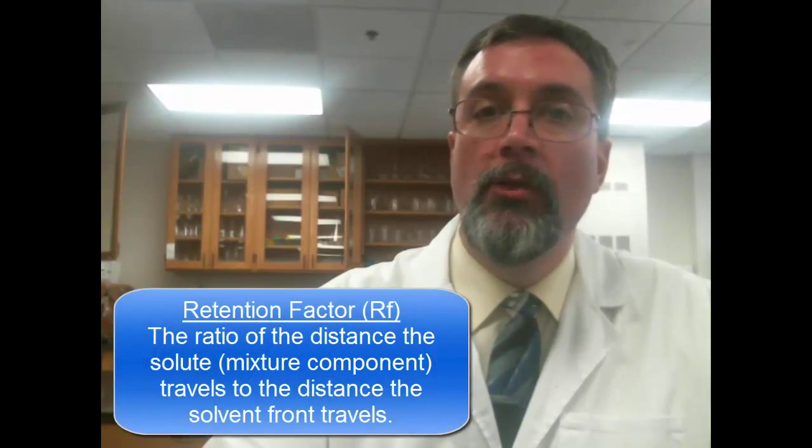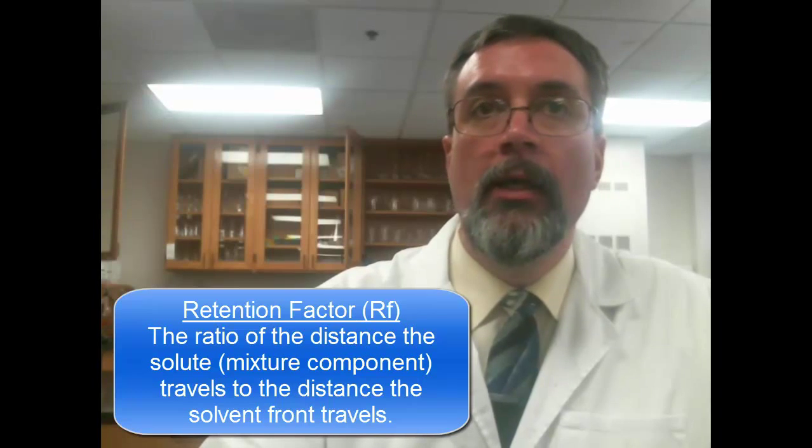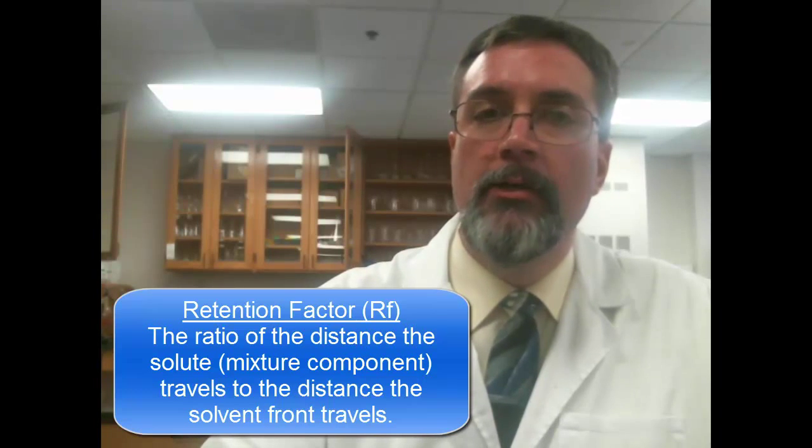Now that's a sort of qualitative way of doing it. But if we want to be more specific, we can actually do some measuring. We can measure the ratio of how far the solvent traveled along our paper as compared to how far our mixture components traveled. And that's something called retention factor, or RF. A substance's retention factor is simply that. It's how well it was retained on the paper, on the matrix, and we can calculate it.